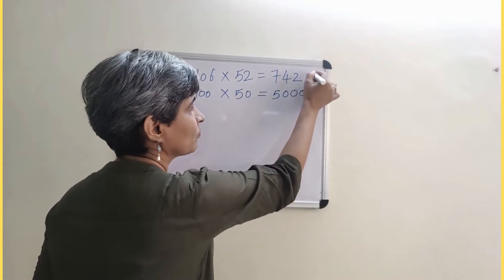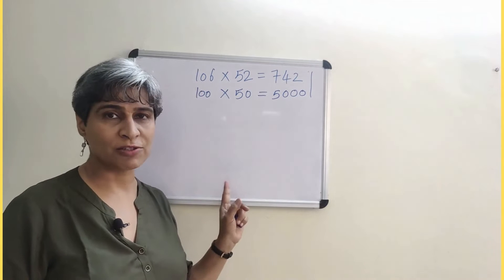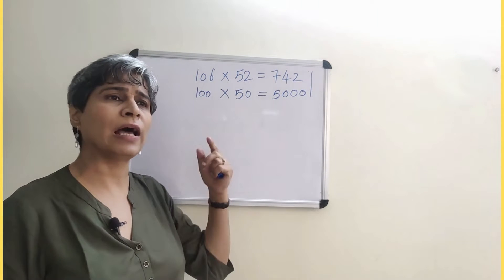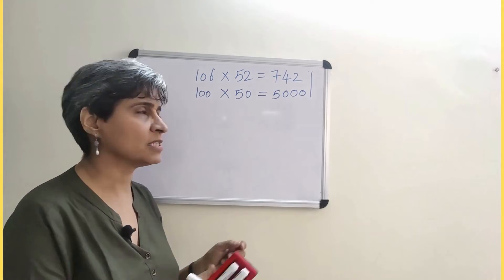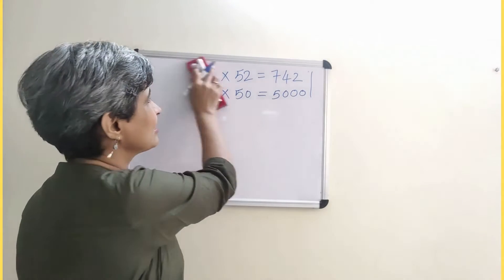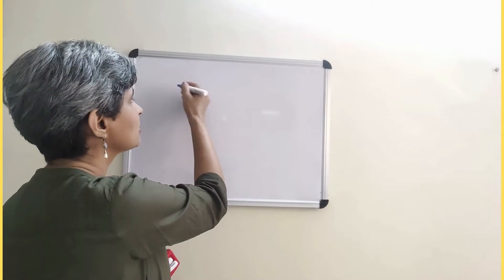Can you see these two numbers? Very obviously my answer is wrong. So I will be more careful. I will check where have I gone wrong and I can correct my mistake. So this is the strategy where we are checking the reasonableness of our answers. Let's see a few more how it works.